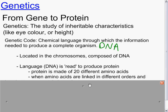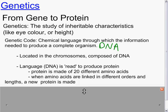Protein itself is made up of 20 different amino acids. When the amino acids are linked in different orders and lengths, you get a new protein.